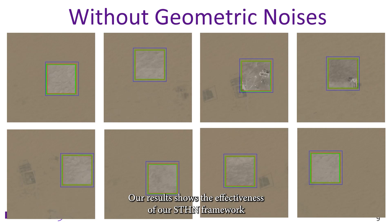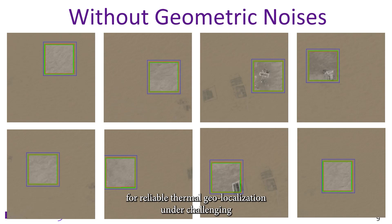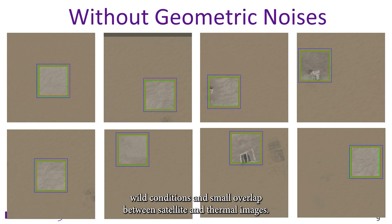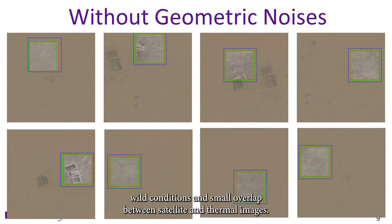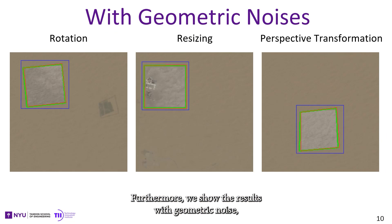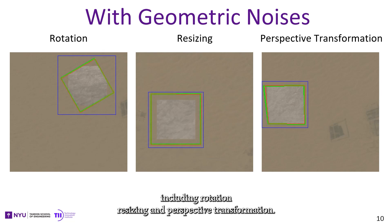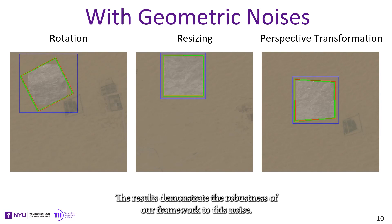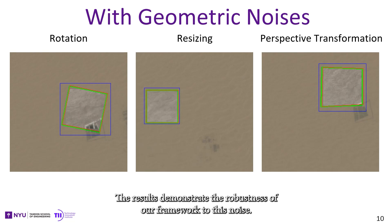Our results show the effectiveness of our STHM framework for reliable thermal geolocalization under challenging wild conditions and small overlap between satellite and thermal images. Furthermore, we show results with geometric noise including rotation, resizing, and perspective transformation. The results demonstrate the robustness of our framework to this noise.